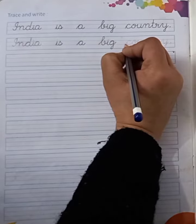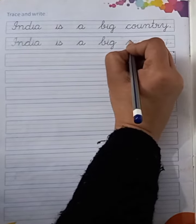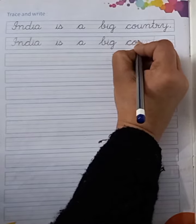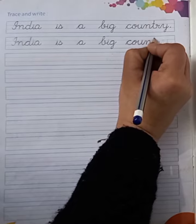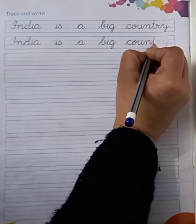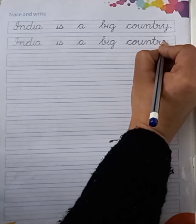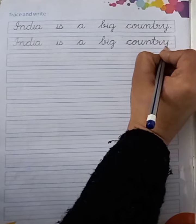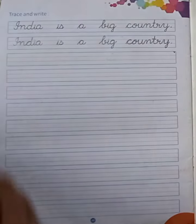Big country. C, O, U, N, T, R, Y — country. India is a big country in dotted form.